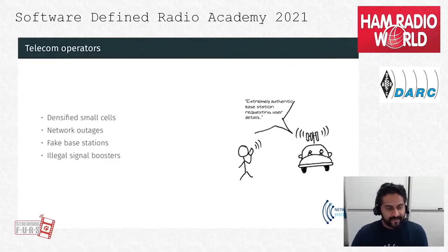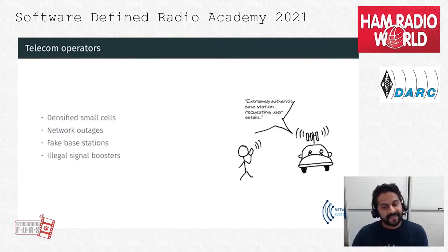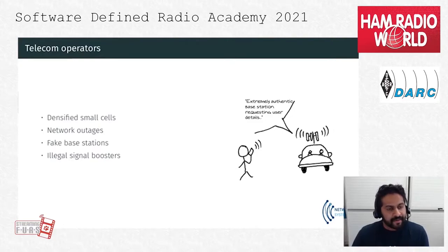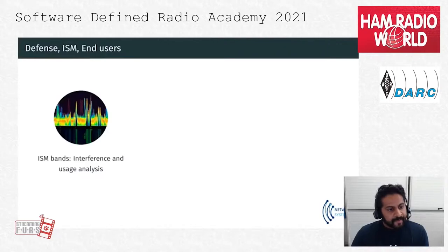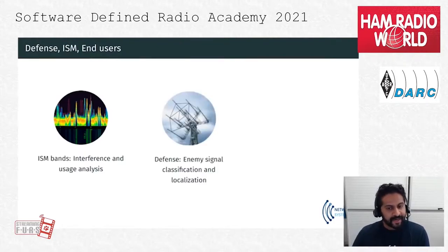Telecom operators are densifying their cells for high throughput requirements, so interference is increasing. There are network outages, people deploying fake base stations using easily available SDRs, and signal boosters affecting cell planning. Mobile wireless interference is one of the prominent interference types reported in Belgium in recent years. In ISM bands, interference and usage analysis is also critical for companies using them, for example for parking lot sensors.